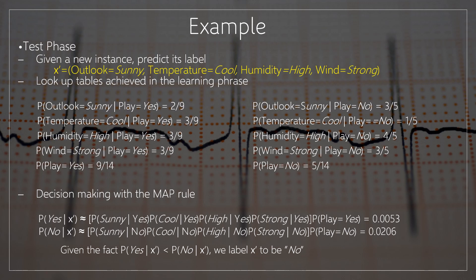Decision making with the MAP rule: P of yes given X dash equals P of sunny given yes, into P of cool given yes, into P of high given yes, into P of strong given yes, into P of play equal to yes, which equals 0.0053. P of no given X dash equals P of sunny given no, into P of cool given no, into P of high given no, into P of strong given no, into P of play equal to no, which equals 0.0206. Given that P of yes given X dash is less than P of no given X dash, we label X dash as no.